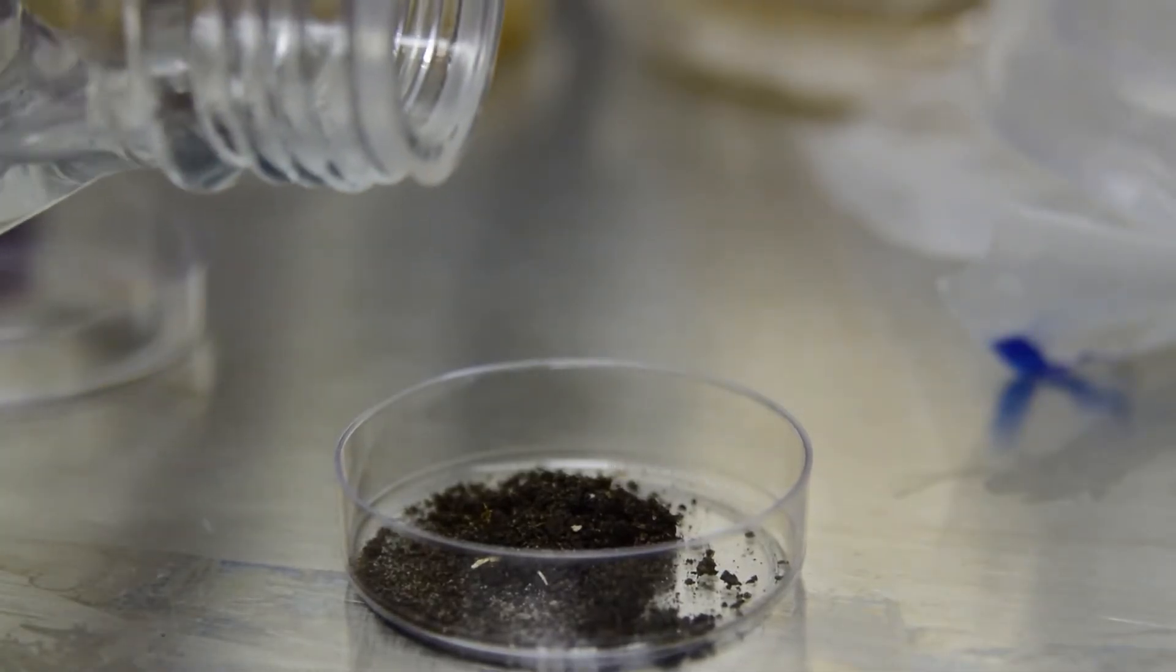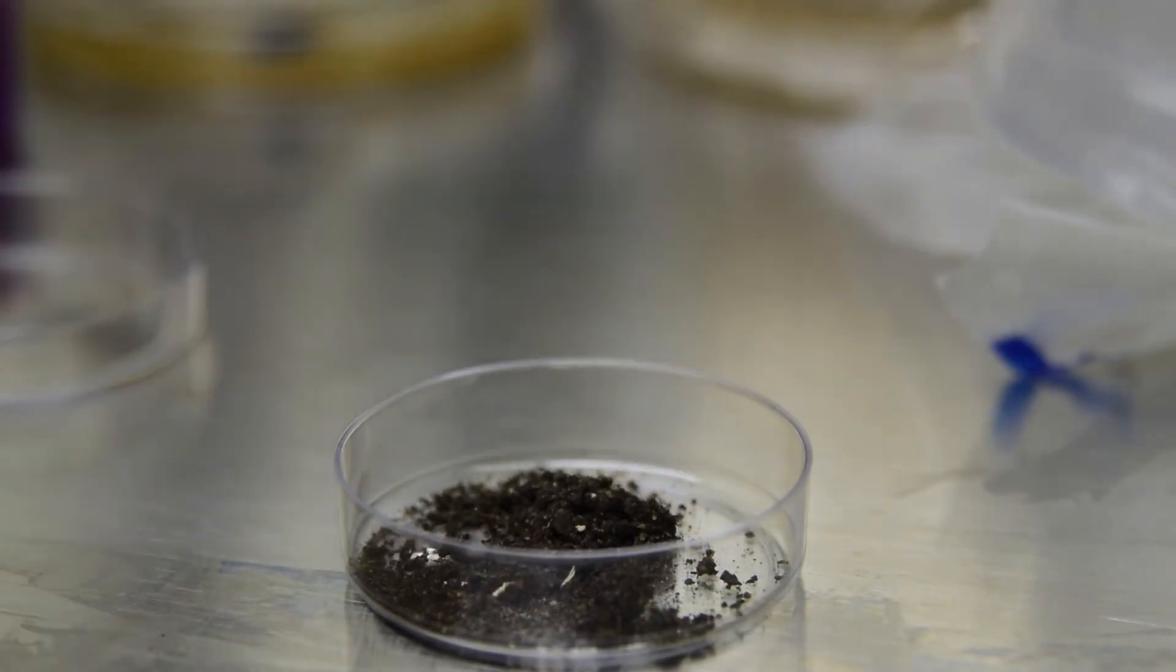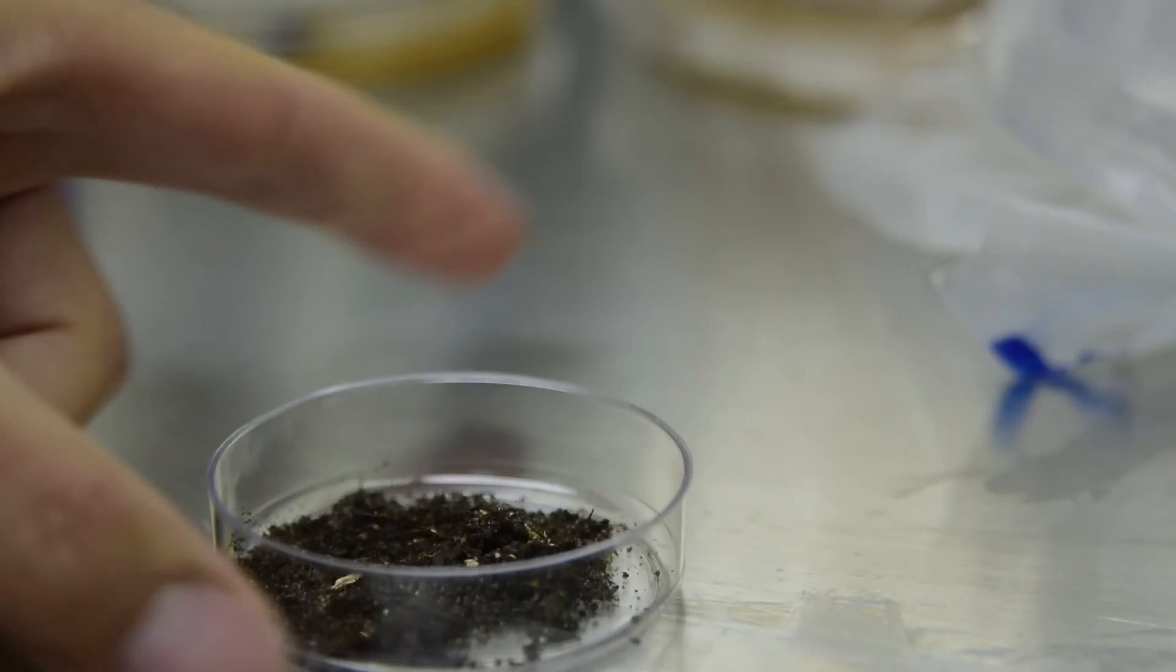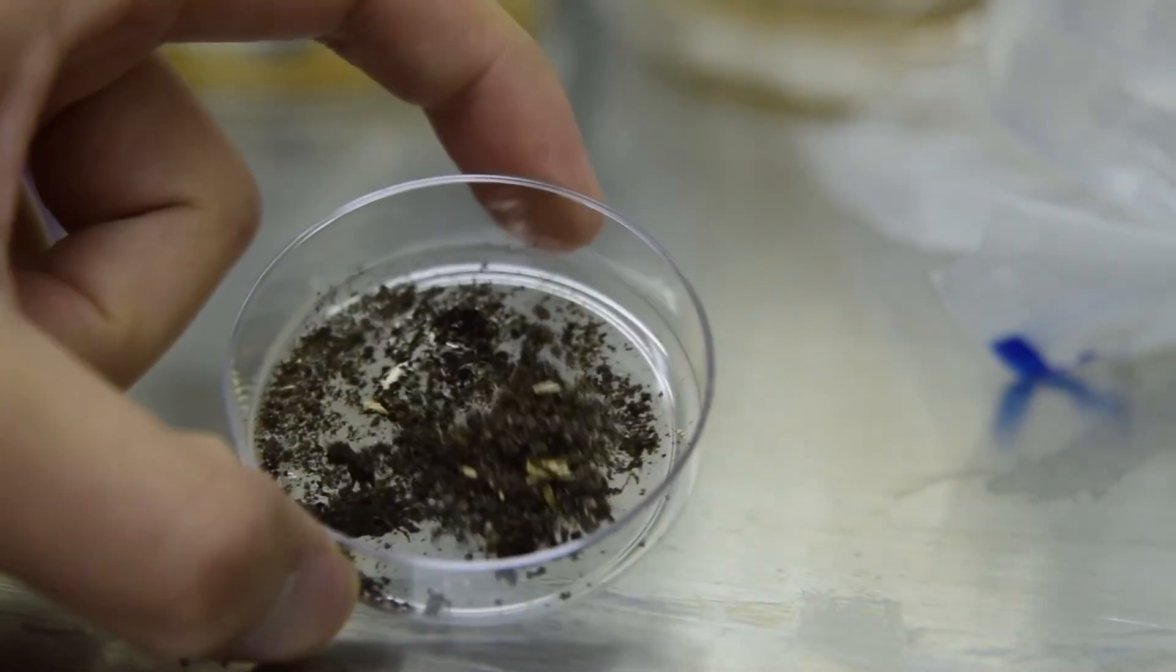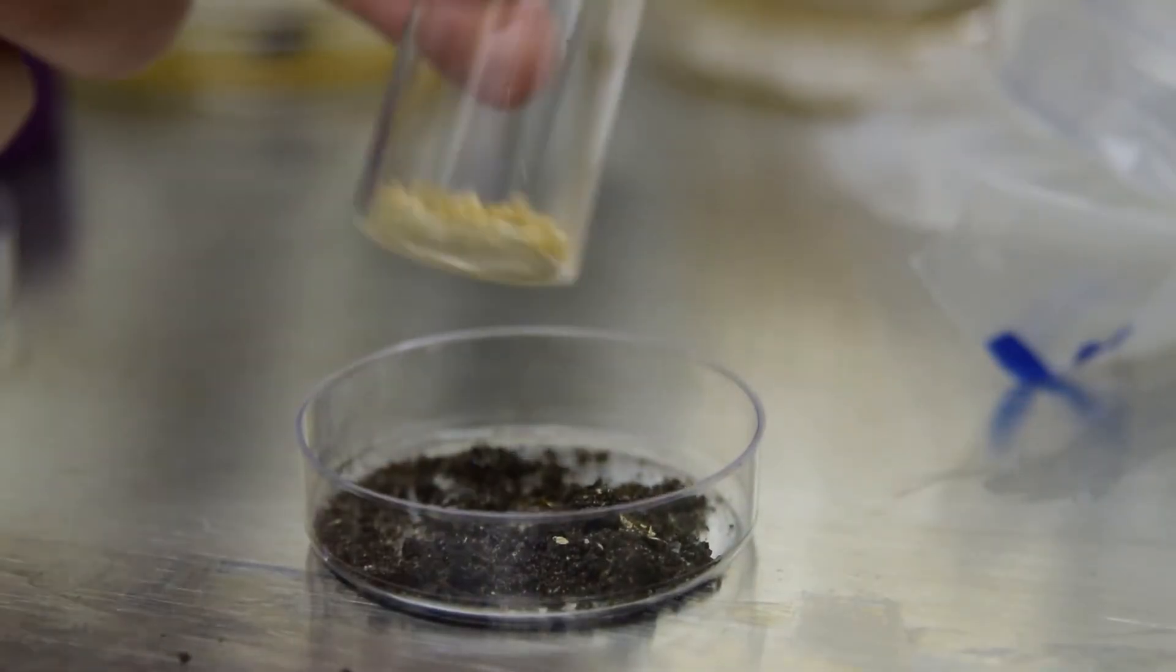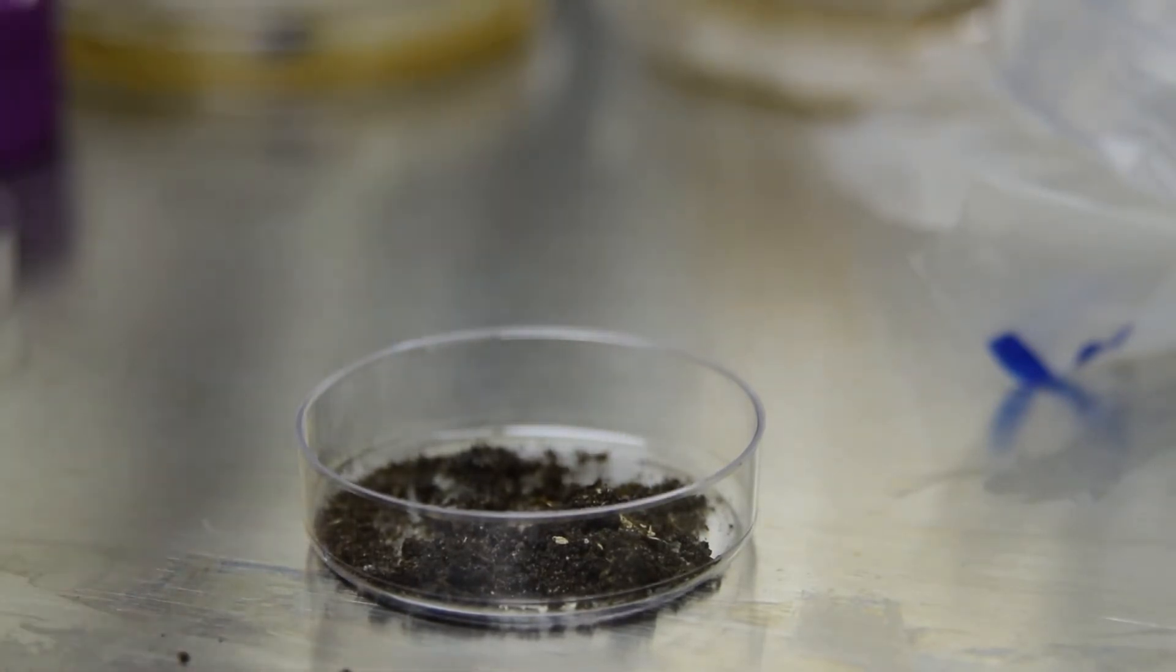Add sterile water to the soil, just enough to moisten. Add sterilized crab or shrimp shell pieces, one or two per plate.